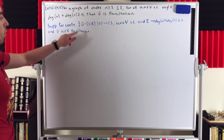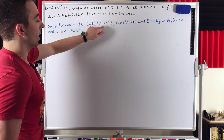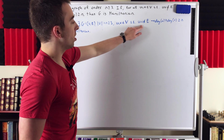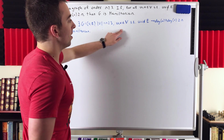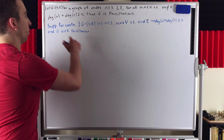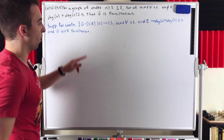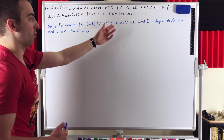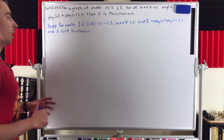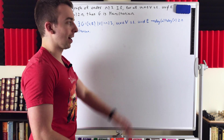Here is our contradiction assumption. Suppose, for the sake of contradiction, there exists a graph G with vertex set V and edge set E, with N vertices — at least three — such that for each pair of non-adjacent vertices in the graph, the sum of their degrees is greater than or equal to N. So we're saying this graph fits our condition. However, the graph is not Hamiltonian, which is the opposite of what we claim. Let's see if we can prove that it forces a contradiction and thereby prove our theorem.